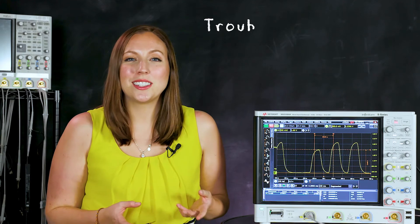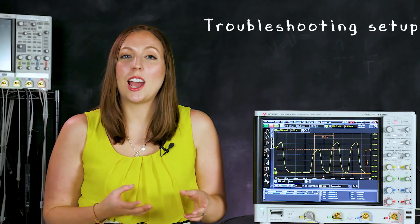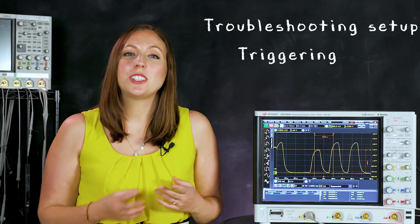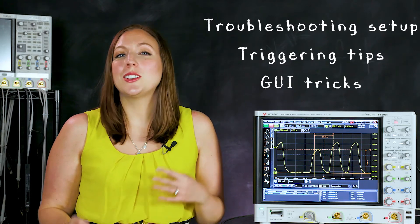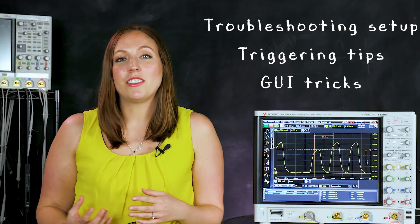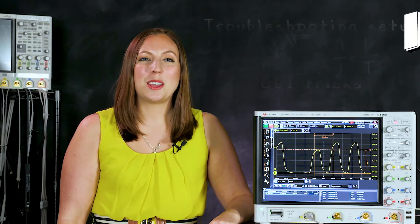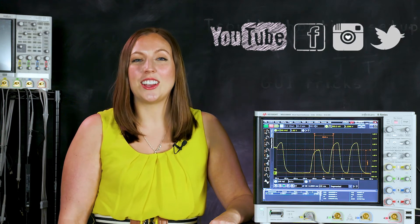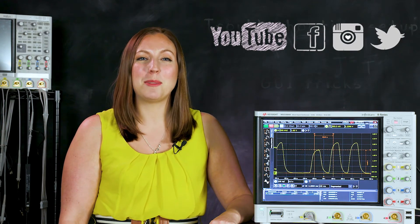So we learned how to set up our oscilloscope for basic troubleshooting and how we can use triggers to capture defects and anomalies in our waveform. We can also save that waveform data if we want to do additional analysis offline later. Thanks for joining me and if you want to see more videos like this, subscribe to our YouTube channel and follow us on Facebook, Instagram, and Twitter.